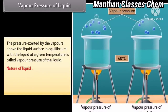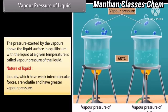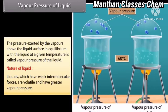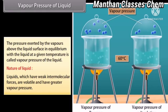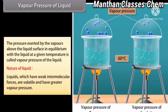Nature of liquid: Liquids which have weak intermolecular forces are volatile and have greater vapor pressure. For example, dimethyl ether has greater vapor pressure than ethyl alcohol.